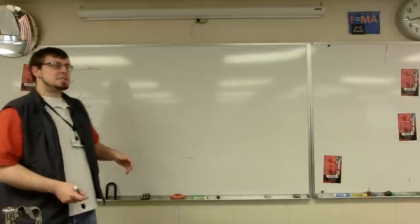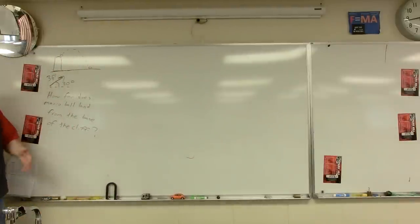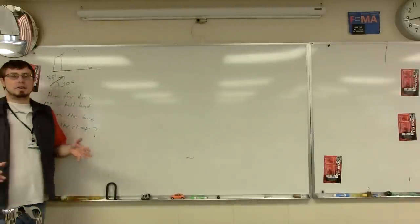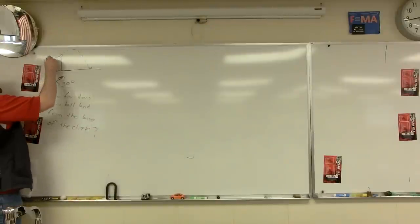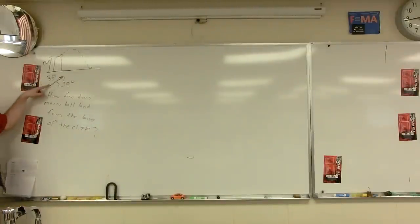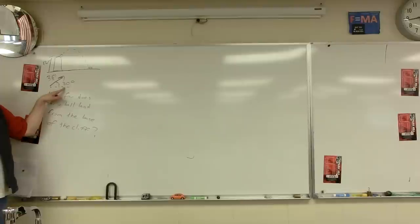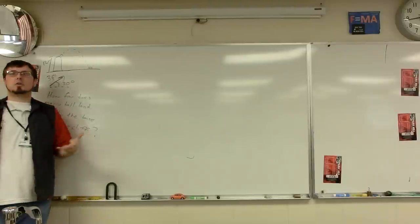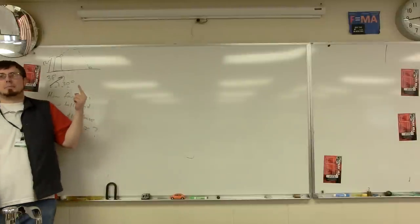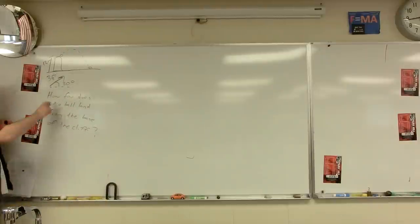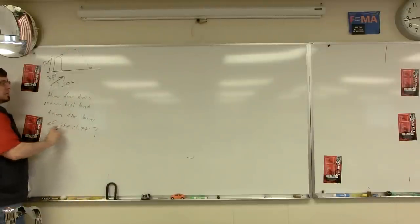Okay, so this is our first projectile problem, and I've skipped most of the words part, because you guys will be able to go from the words to the picture. We have Mario Ball being launched off a 12 meter cliff, and he's being fired up at a 30 degree angle above the horizontal at 3 meters per second. There are a lot of different questions I could ask based on these initial conditions. For this first one, I'm just going to ask one, but it's going to end up answering two things. How far does Mario Ball land from the base of the cliff?